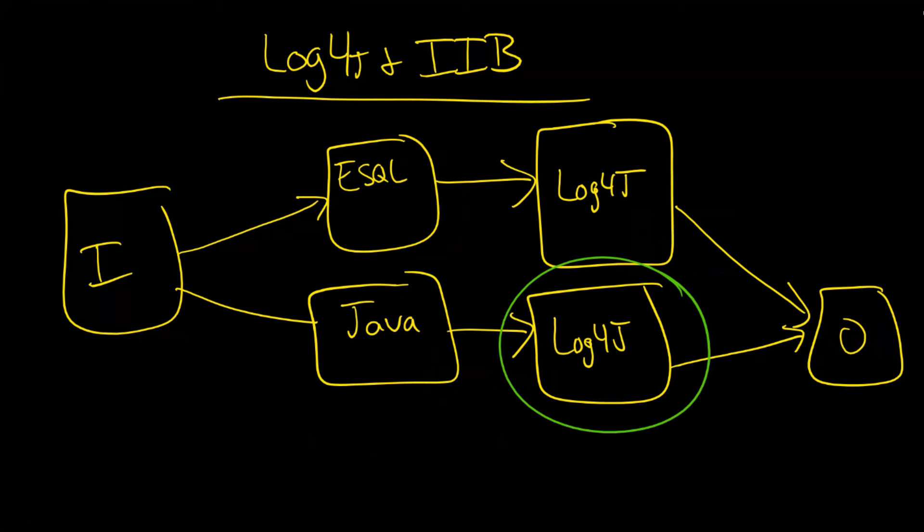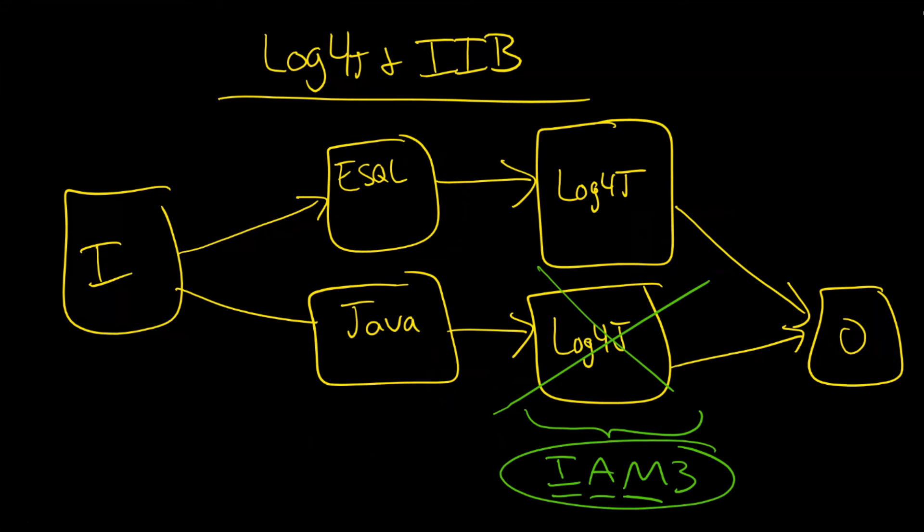That is to say, log4j as a node is made possible through something called IAM, or Inter Application Messaging. And specifically, it's called IAM3. And without this, if you don't install this, then you're not going to even have the option to install this log4j node. It won't be listed in the program itself.